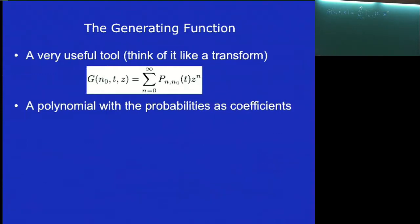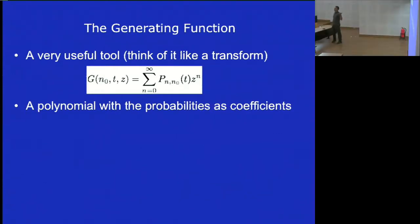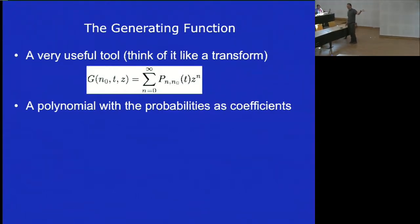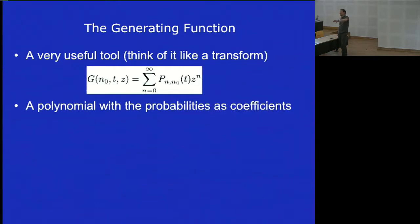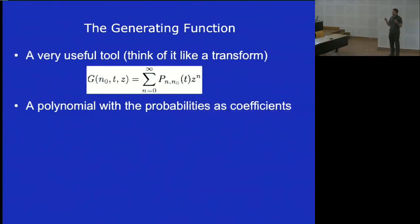We're expanding a polynomial using the probabilities as the coefficients. So we write G of N₀, T, and Z equal to the sum from N equals zero to infinity of P_N,N₀ of T times Z to the N. This doesn't look like it's going to be helpful. We've introduced Z — we've kind of replaced the N with a Z. It's not obvious we've made anything better. But if you know the generating function, you can calculate all kinds of things.